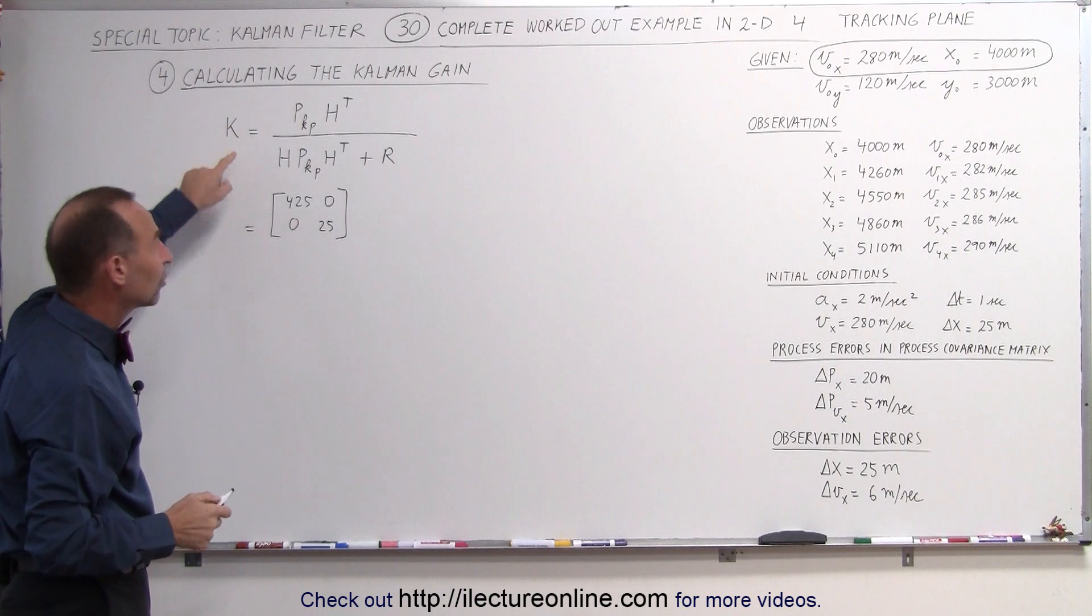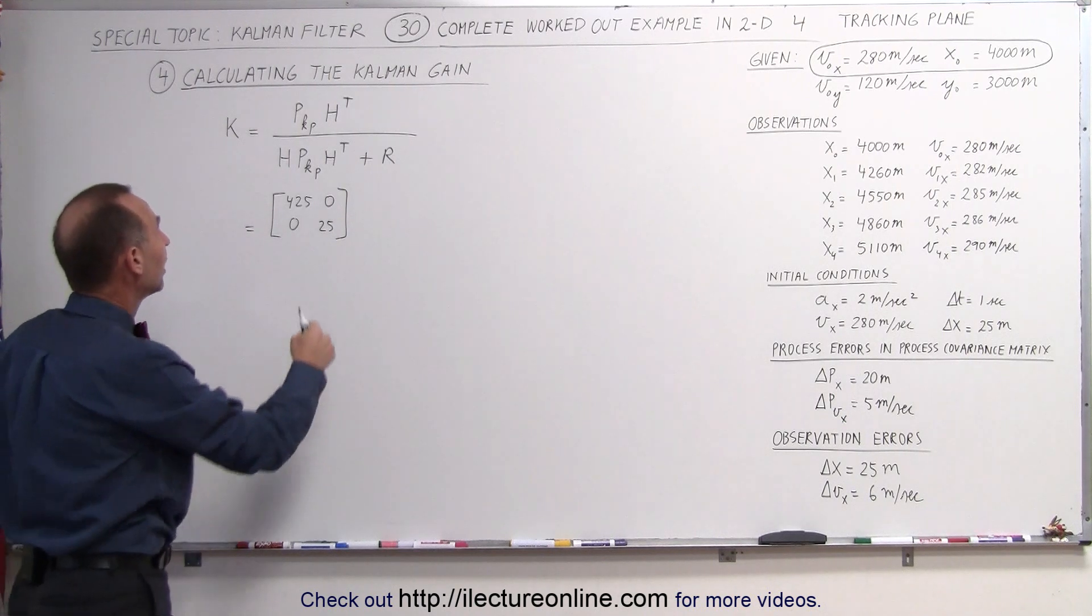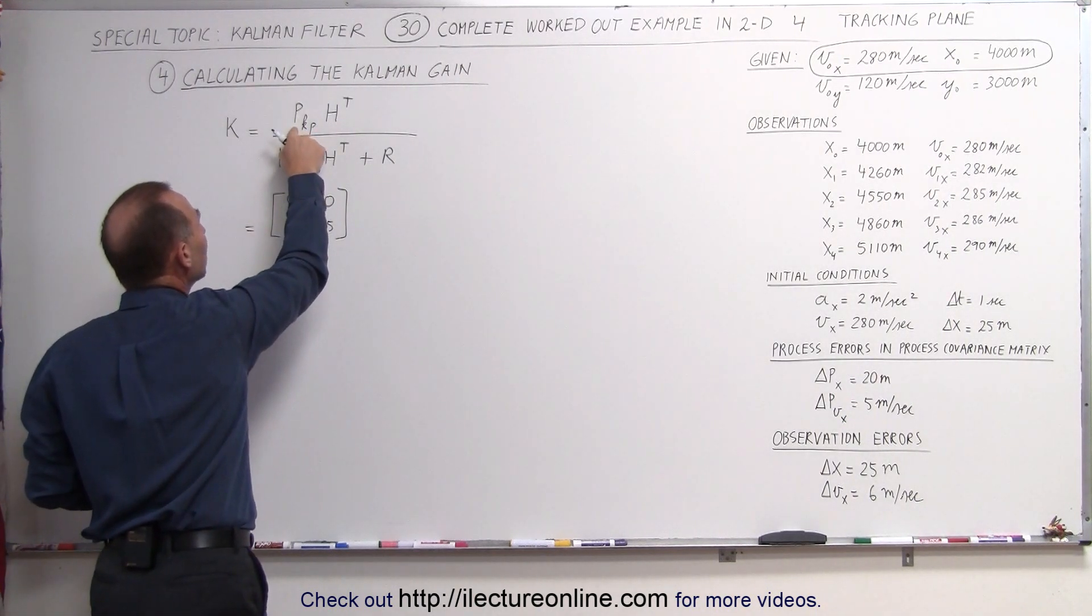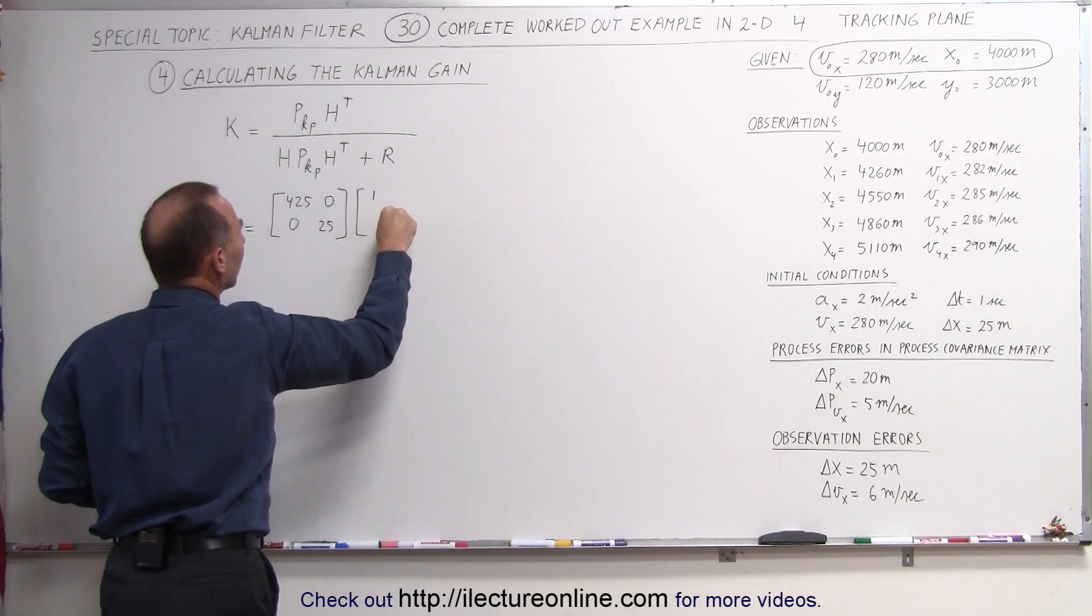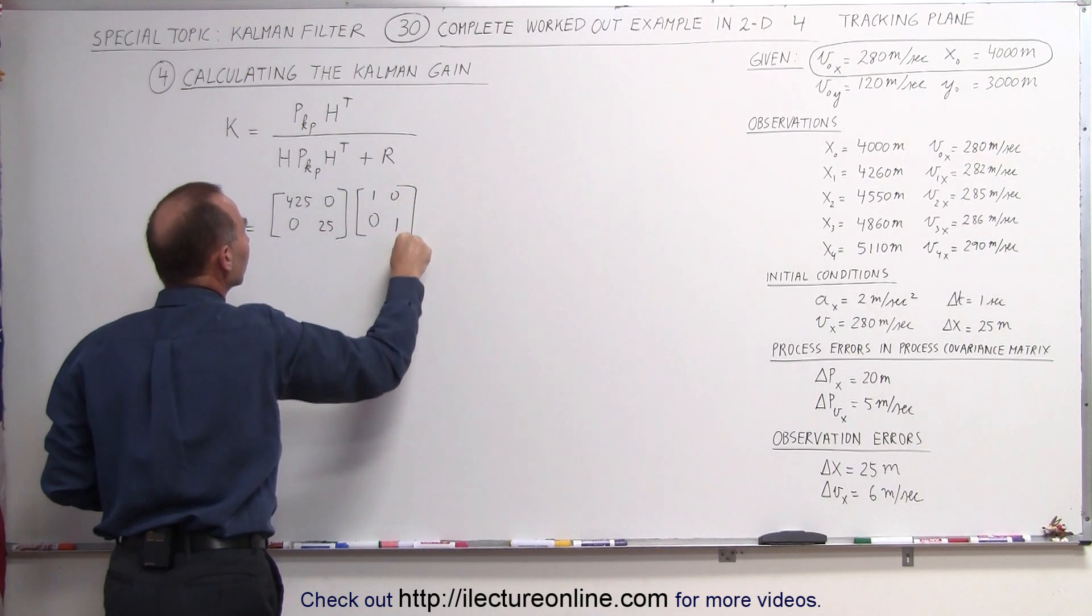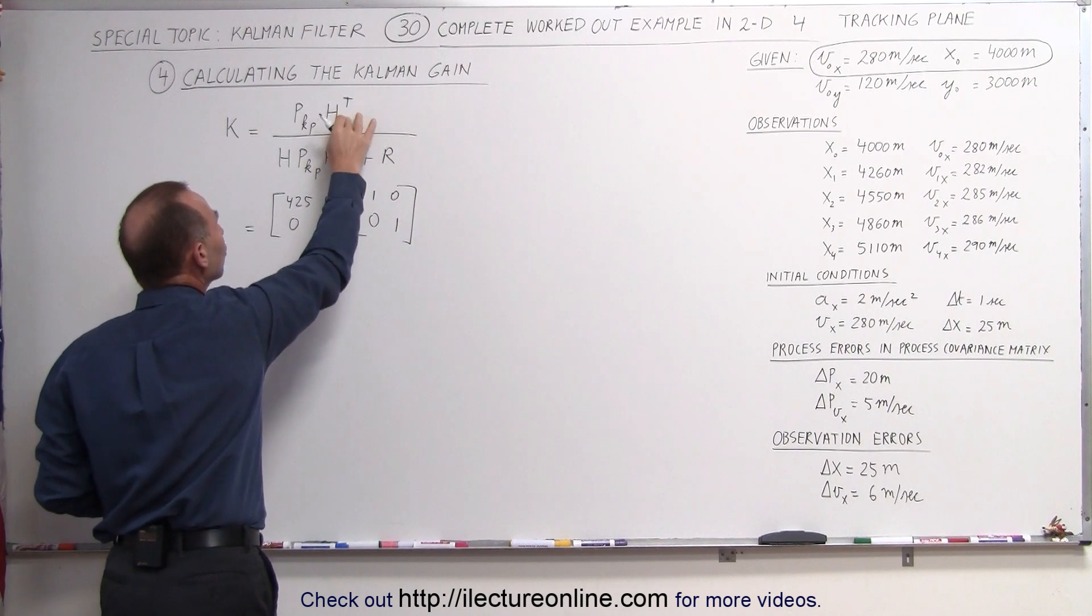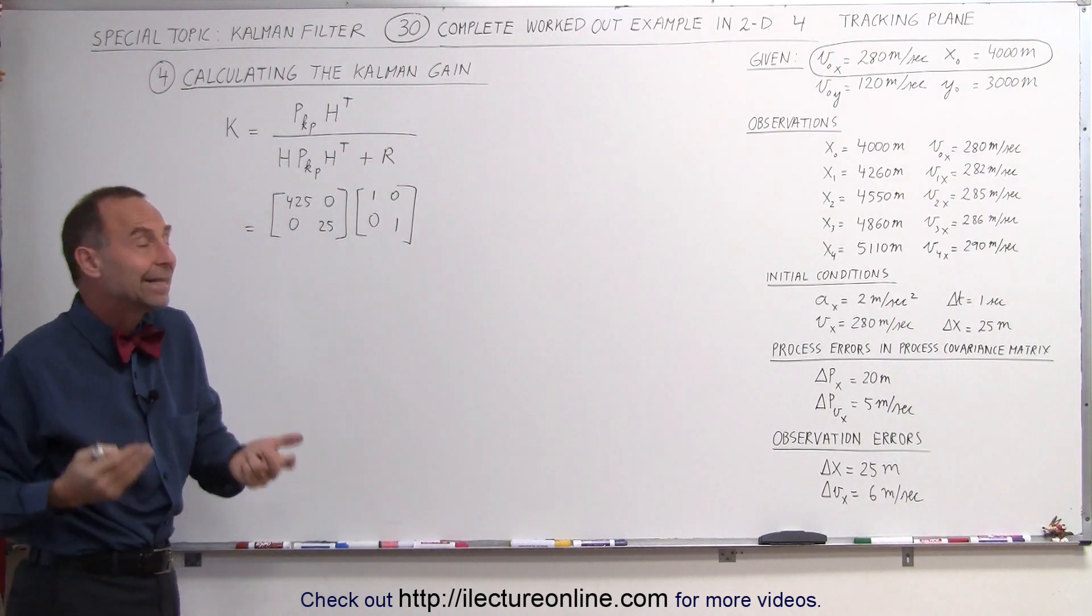Now it turns out the Kalman gain matrix is going to be a 2 by 2 matrix and this is also a 2 by 2 matrix, which means we only need to have a matrix that looks like this to convert it, just simply the identity matrix. So in this particular case the H transpose simply becomes the identity matrix.